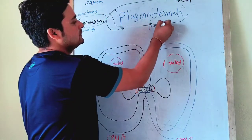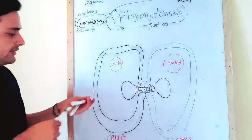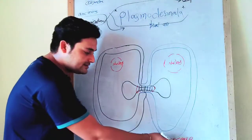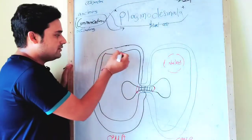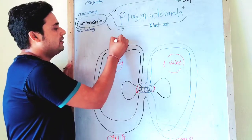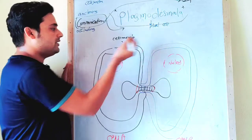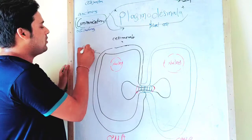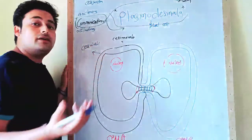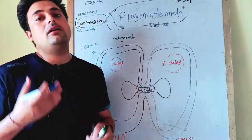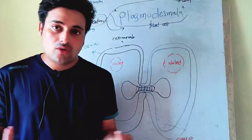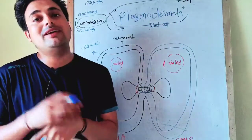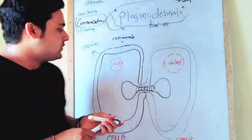Plasmodesmata will be found in plant cells. Here is the structure of plasmodesmata. As you can see, this is plant cell A and this is plant cell B. This inner layer is the cell membrane, also called the plasma membrane. Outside of the membrane is the cell wall, which in plants is made up of cellulose, while in fungi it can be made up of chitin. In animal cells, the cell wall is absent.